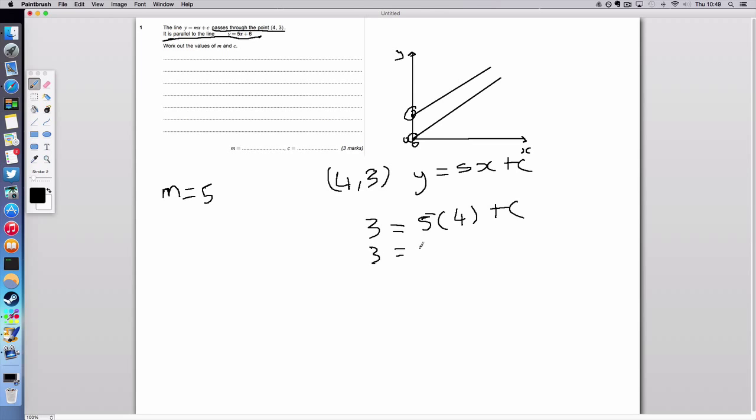So by simplifying just below that, substituting, 20 from both sides, 3 minus 20 is negative 17 and then we have c on its own. Now this allows us to find our c value on its own and we can write that as such. So our m is 5 and our c is minus 17.